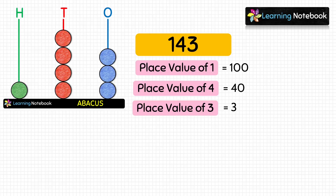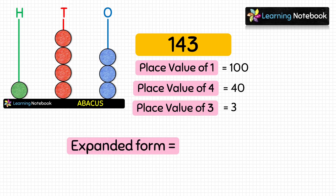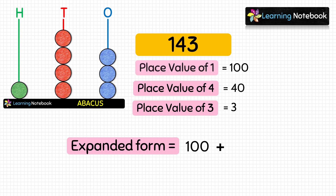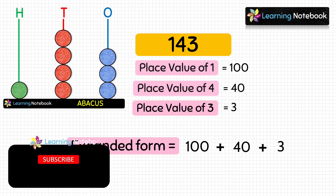Now let's write the expanded form. The expanded form of a number is the sum of the place values of its digits. So the expanded form of 143 is: place value of 1 which is 100, plus place value of 4 which is 40, plus place value of 3 which is 3.